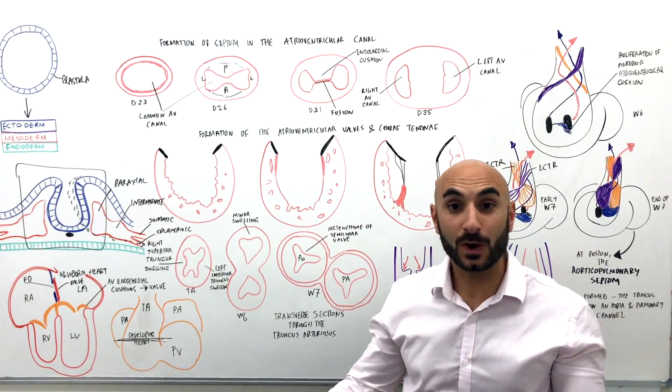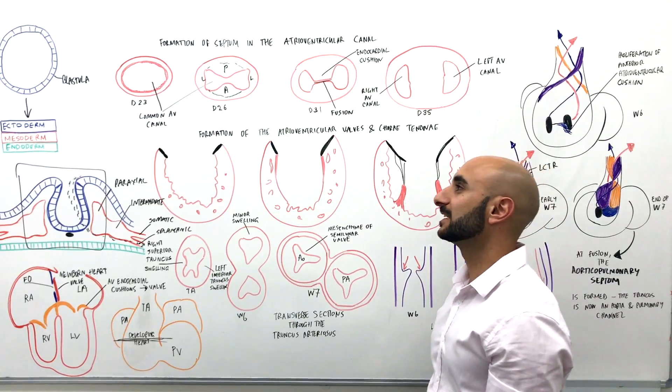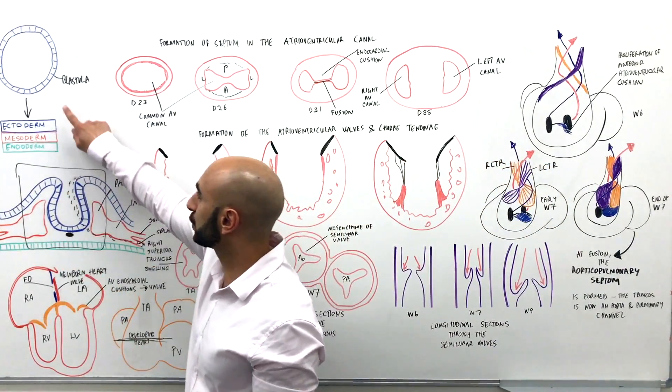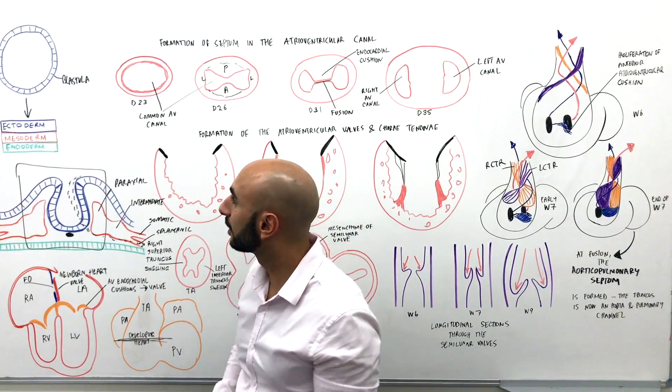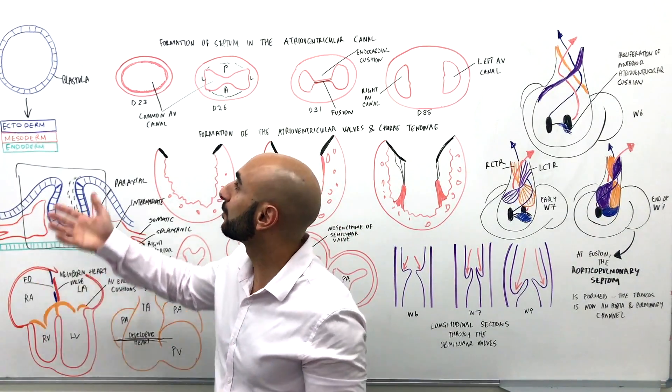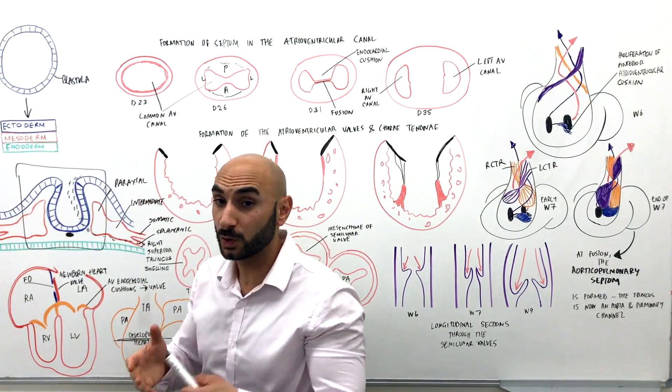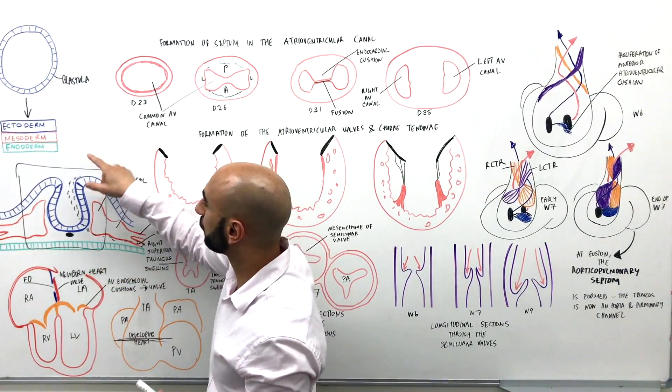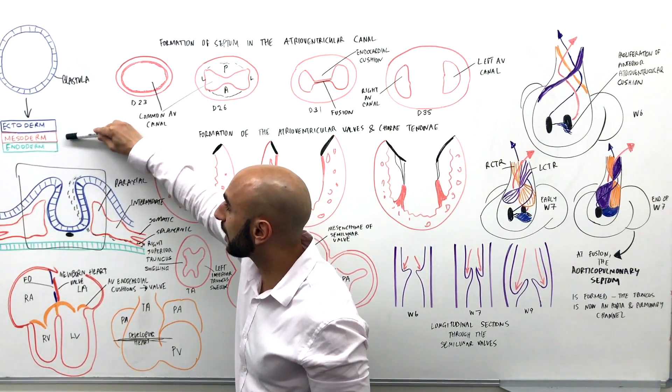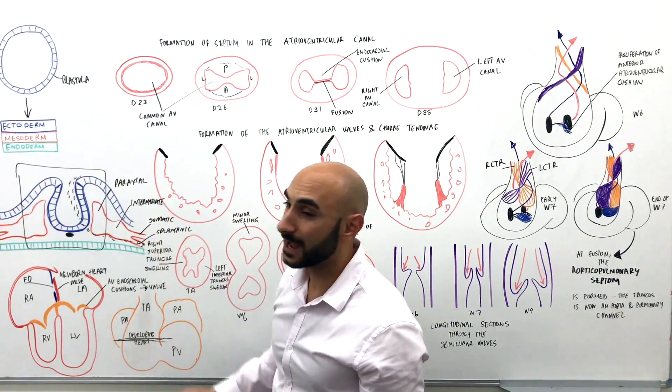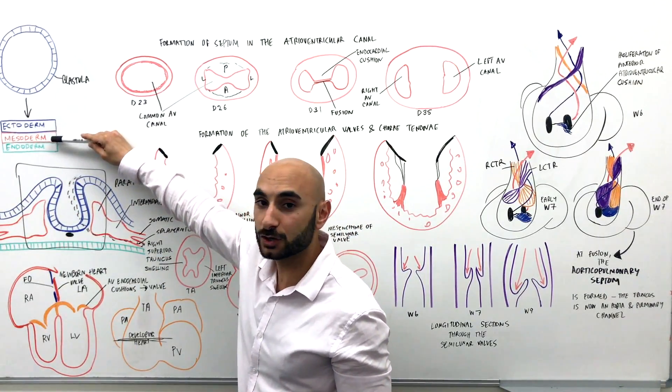Okay, with that being said, let's get straight into it. And as usual, let's begin at the beginning at the blastula. The blastula will become you, and that's why it's important to know what it is. So the blastula will undergo a process called gastrulation to form the three germ layers.